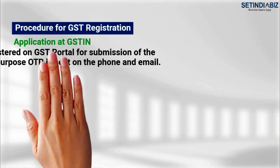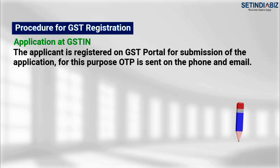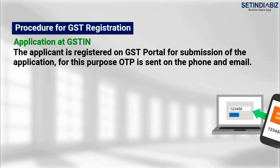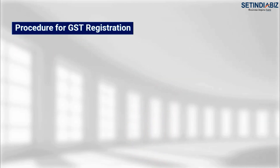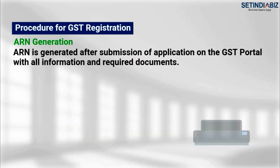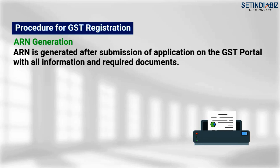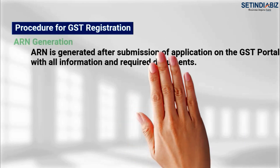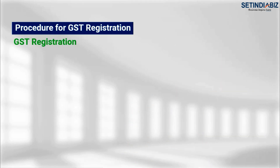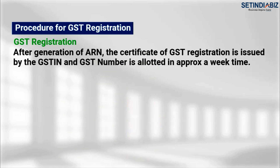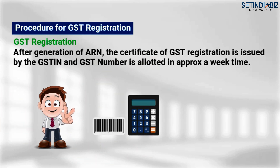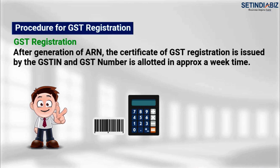Step two: Application at GSTIN. The applicant is registered on the GST portal for submission of the application. For this purpose, an OTP is sent on the phone and email. Step three: ARN Generation. ARN is generated after submission of the application on the GST portal with all information and required documents. Step four: GST Registration. After generation of ARN, the certificate of GST registration is issued by the GSTIN and a GST number is allotted in approximately one week's time.